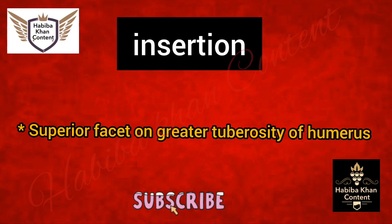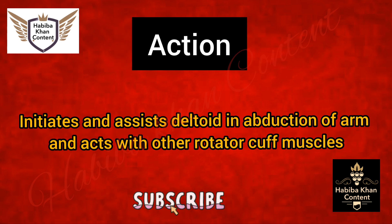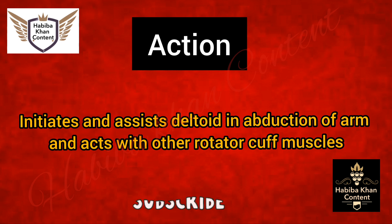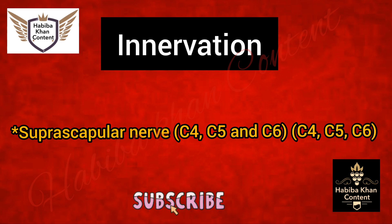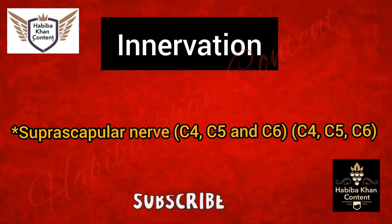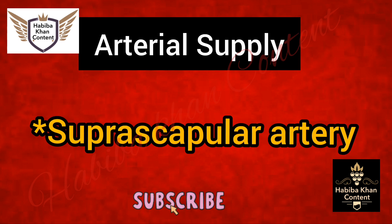Supraspinatus muscle. Origin: supraspinous fossa of scapula. Insertion: superior facet on greater tuberosity of humerus. Action: initiates and assists deltoid in abduction of arm; acts with other rotator cuff muscles. Innervation: suprascapular nerve C4, C5, and C6. Arterial supply: suprascapular artery.